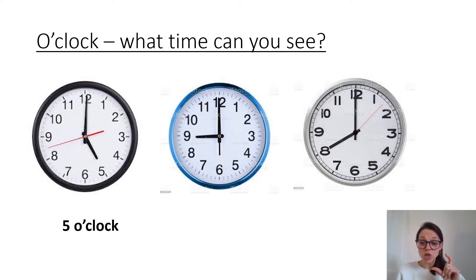So then we look at that shorter hand, that hour hand, to tell us which hour it is. So for our first one there, that short hand is pointing to the five. So it's five o'clock. Pause the video here and write down on your whiteboards, what are the other two clocks showing?